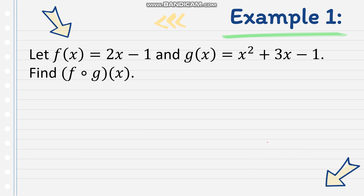Let's try some examples. Let's say we have f of x equals 2x minus 1, and g of x equals x squared plus 3x minus 1. We have to find f circle g of x, or f of g of x. To know which function serves as the input, look at the given: f circle g of x means the second function mentioned — g — will be our input. So g of x is our input.